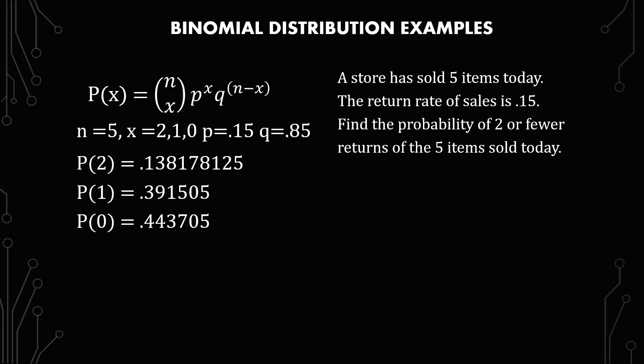So let's kind of summarize this. We have the probabilities of two, one, and zero. What does that add up to? So the probability of x less than or equal to two equals P(0) plus P(1) plus P(2) equals 0.973388125. And this is where you finally round it, which gives you 0.973.